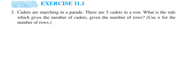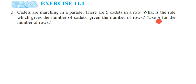Hello everyone. Here's a question from Exercise 11.1, third question — chapter is Algebra of Classes. The question is: cadets are marching in a parade, there are five cadets in a row. What is a rule which gives the number of cadets, given the number of rows? Use n for the number of rows. We have already given n as a variable to be used here.